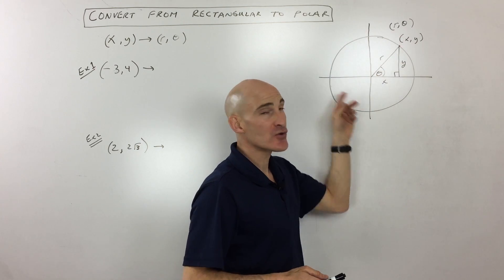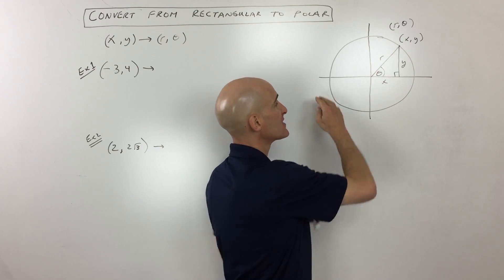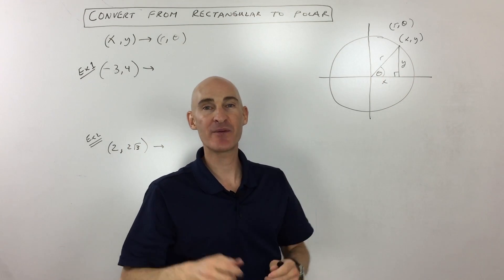Remember, polar coordinates, it's a circular way of locating a point, whereas rectangular coordinates, it's like an etch-a-sketch kind of way, you can only go left and right up and down.